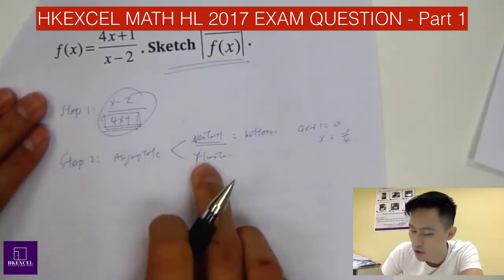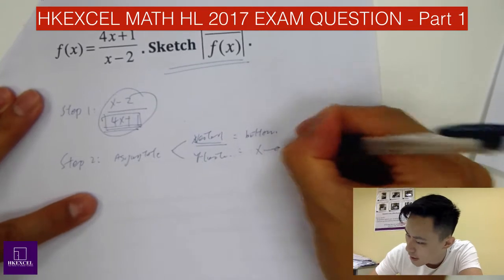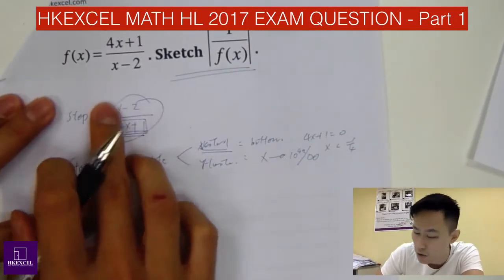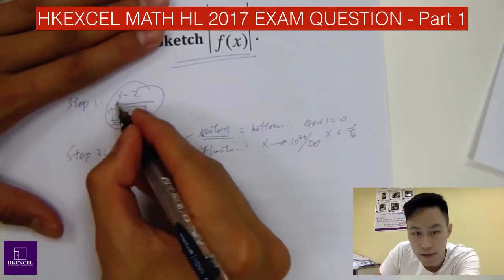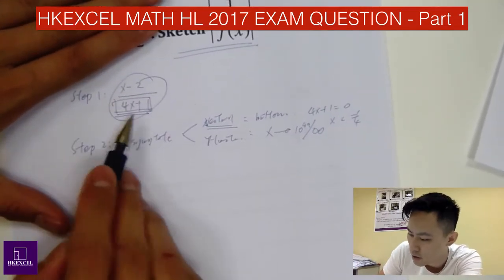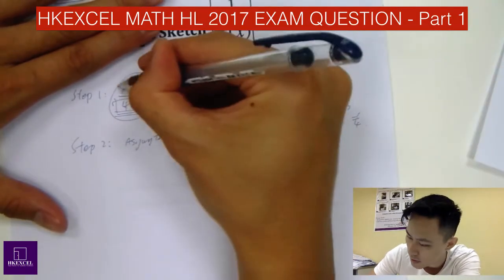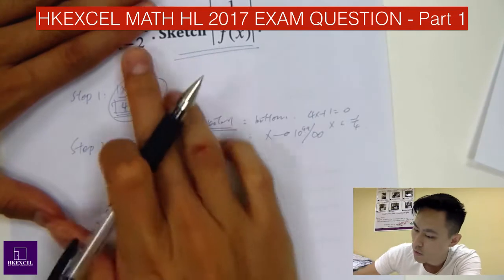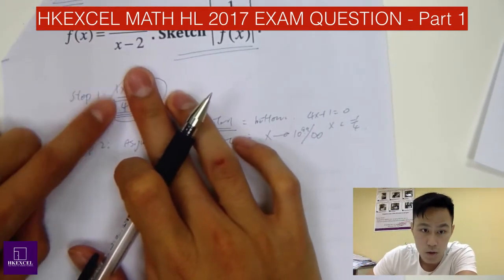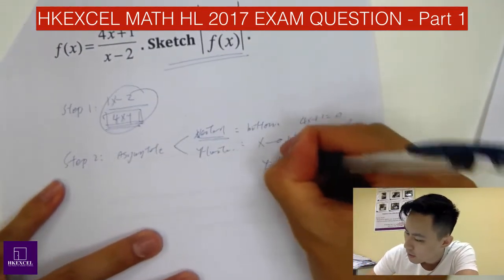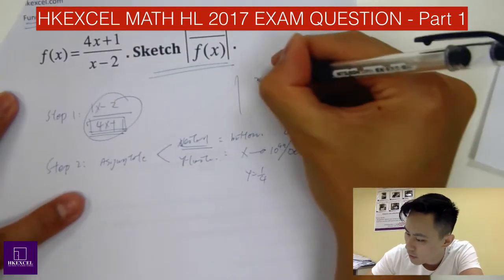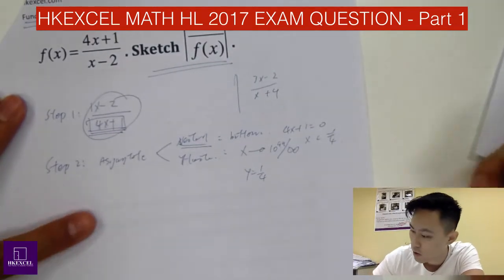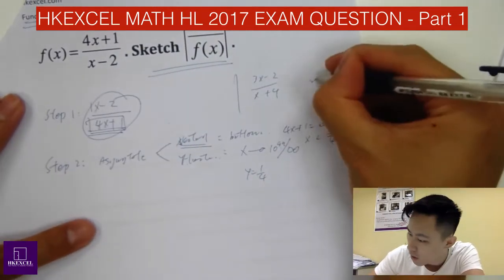Now find the horizontal asymptote by substituting x = infinity into the equation. Just look at the coefficients in front of x: the numerator has 1 and the denominator has 4, so y = 1/4. For example, if you had (3x - 2) / (x + 4), the horizontal asymptote would be y = 3/1 = 3.